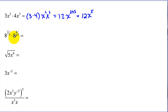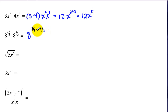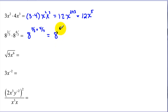Here we have two things multiplied together with the same base, so we add the exponents. This still works even with fractional exponents. We take two-thirds plus four-thirds. Since we have common denominators, we just add the fractions to get six-thirds, which simplifies to 2. So that's 8 squared, and 8 squared is 64.